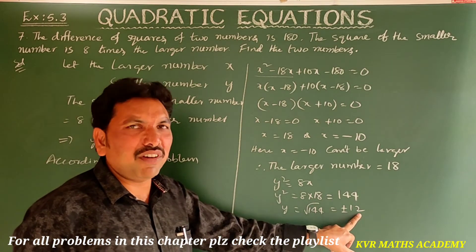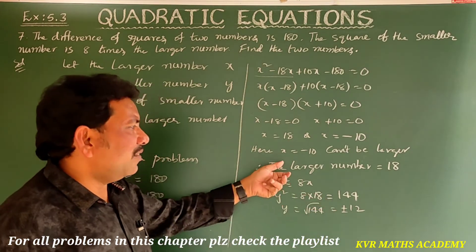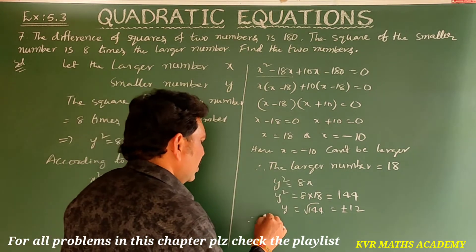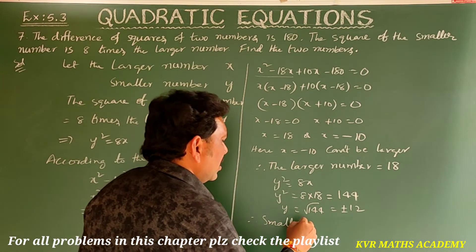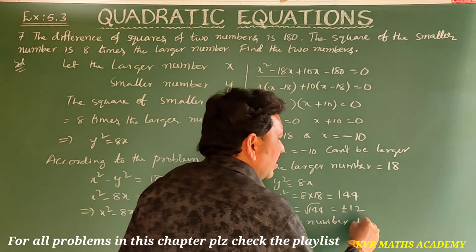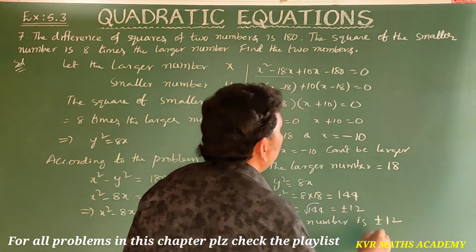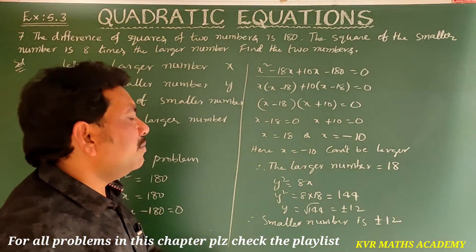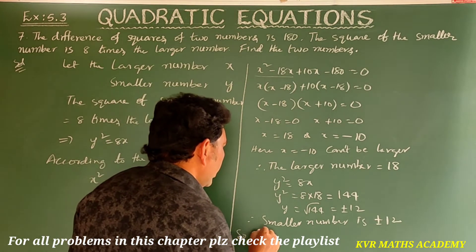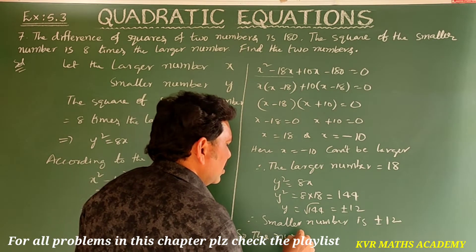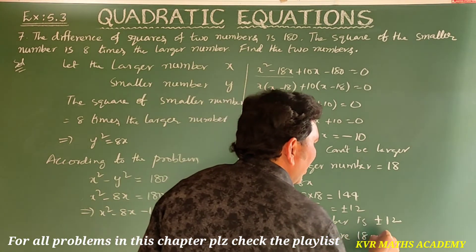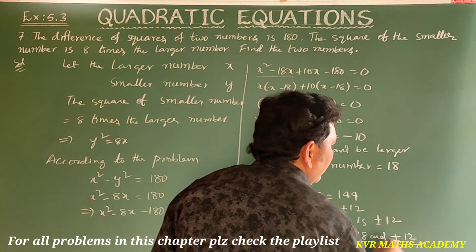The smaller number will be plus 12 or minus 12, and our larger number is 18. Therefore, the numbers are 18 and plus or minus 12.